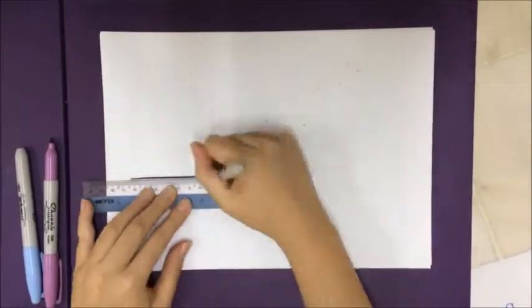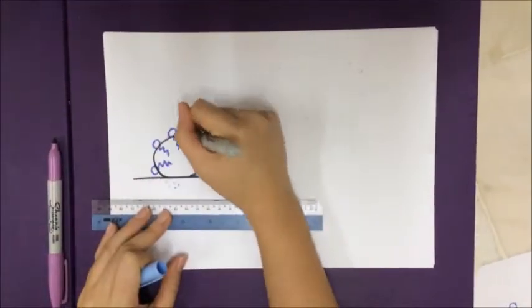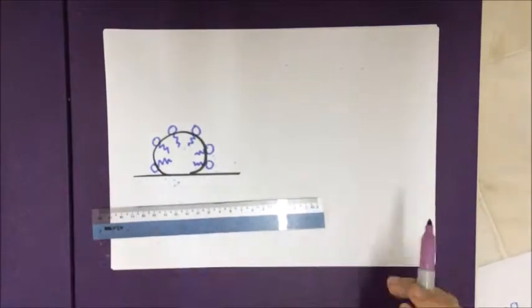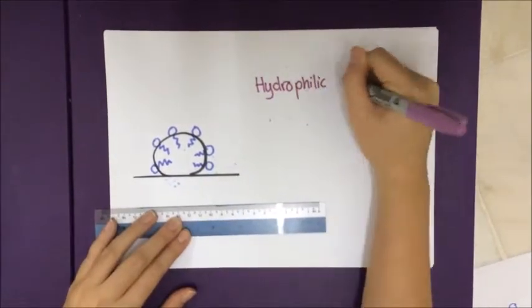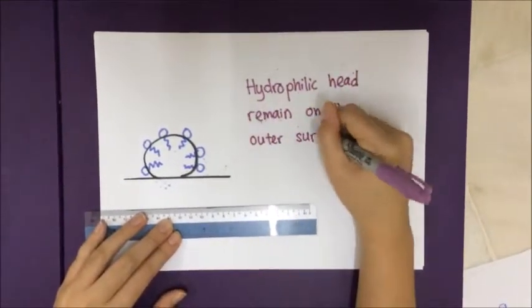When water flows through and the detergent molecule is agitated, the grease particle is pulled away from the surface and emulsified into the water stream.